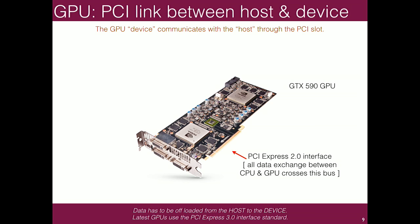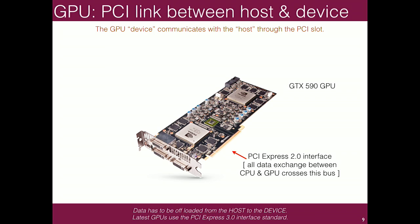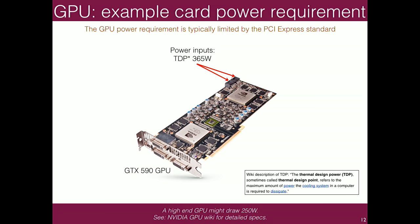The GPU communicates with the host through the PCI Express bus, and if used for its original purpose, communicates with the monitor through display interfaces. All data you want to communicate to the GPU goes through that interface — so if you want to do array arithmetic, you'd have to copy the array contents onto the board. On the board it has its own memory chips, its own processor, and requires its own power supply directly from the power supply. It's literally a self-contained computer with an interface to the machine it's connected to.